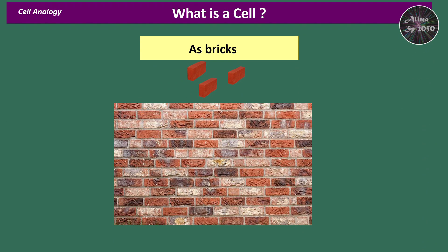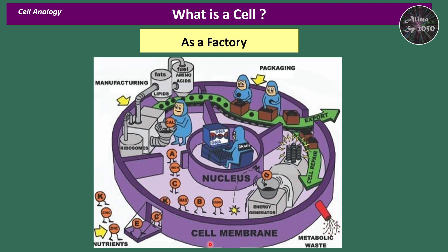Like bricks isolated or clustered to form a wall, the cell can be analogous to a factory: a wall and door separate the inner components from the external environment and allow things to enter and leave. A central office controls and manages activities and initiates production. A generator produces energy. An assembly line assembles raw material for distribution. A conveyor belt moves product. Packaging and shipping handle distribution. A collection and recycle center breaks down and recycles used parts, and a storage area stores material for later use.